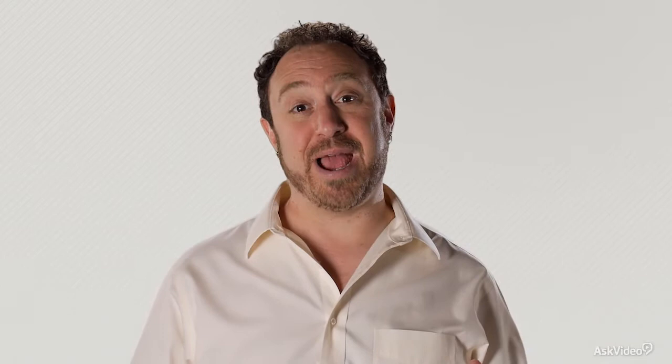Just to keep you on your toes, f-stops are a whole other set of numbers for you to keep track of. And best of all, they're inverted and logarithmic. So this means an f-stop of f/22 means the iris is closed to a pinhole, only letting in a tiny bit of light.